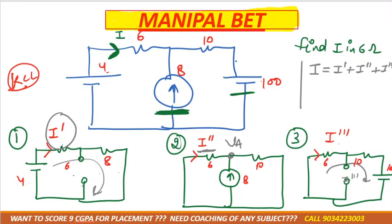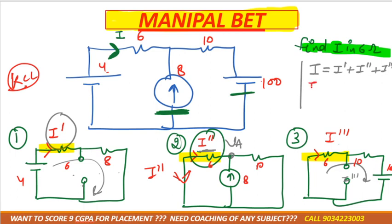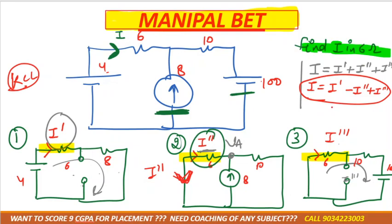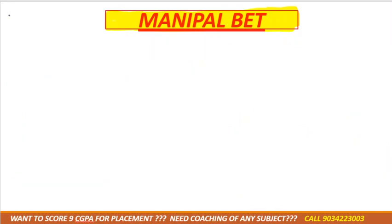All currents are added because their directions are the same in each step. If by mistake you took an opposite direction for I'', then you must subtract it: I = I' − I'' + I'''. Whichever direction is taken as opposite must be subtracted. To avoid this complication, it is preferable to always take the same current direction in all steps.